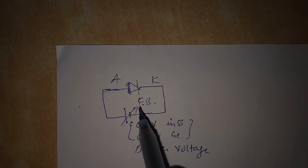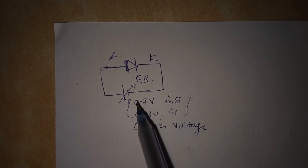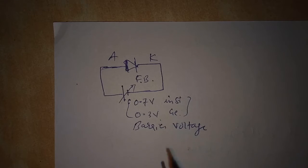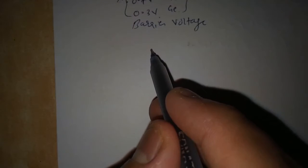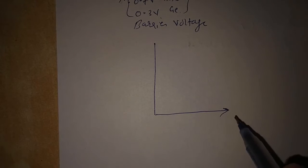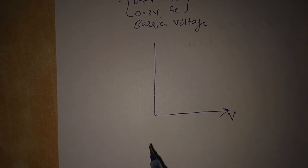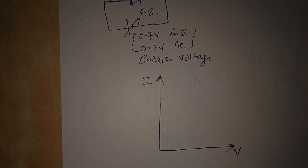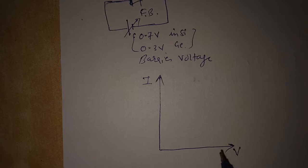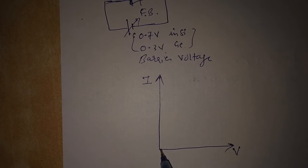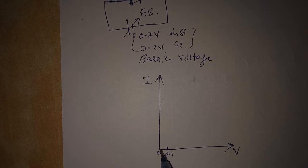Before 0.7 volts, only a leakage current can flow and we can neglect it. If we draw the voltage versus current characteristic: the horizontal axis represents voltage as the independent variable, and the vertical axis represents current as the dependent variable. Independent variables are generally drawn on the x-axis and dependent variables on the y-axis. If we increase the voltage from 0 onwards, at 0.1 volts there is very little current — in the microampere range.